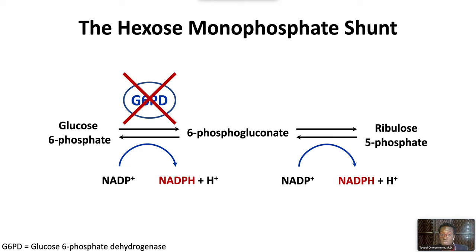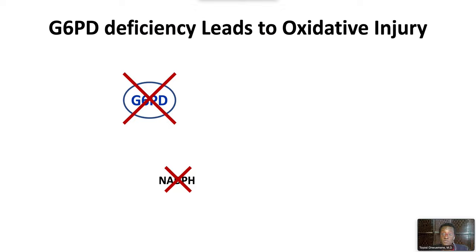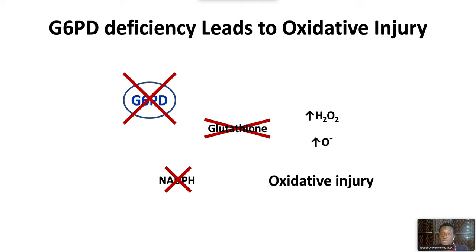Without G6PD, there is no NADPH. For this reason, G6PD deficiency leads to oxidative injury, because without G6PD there is no NADPH. And without NADPH, there can be no restoration of glutathione levels, which means oxidants accumulate, and oxidative injury will lead to red cell death.